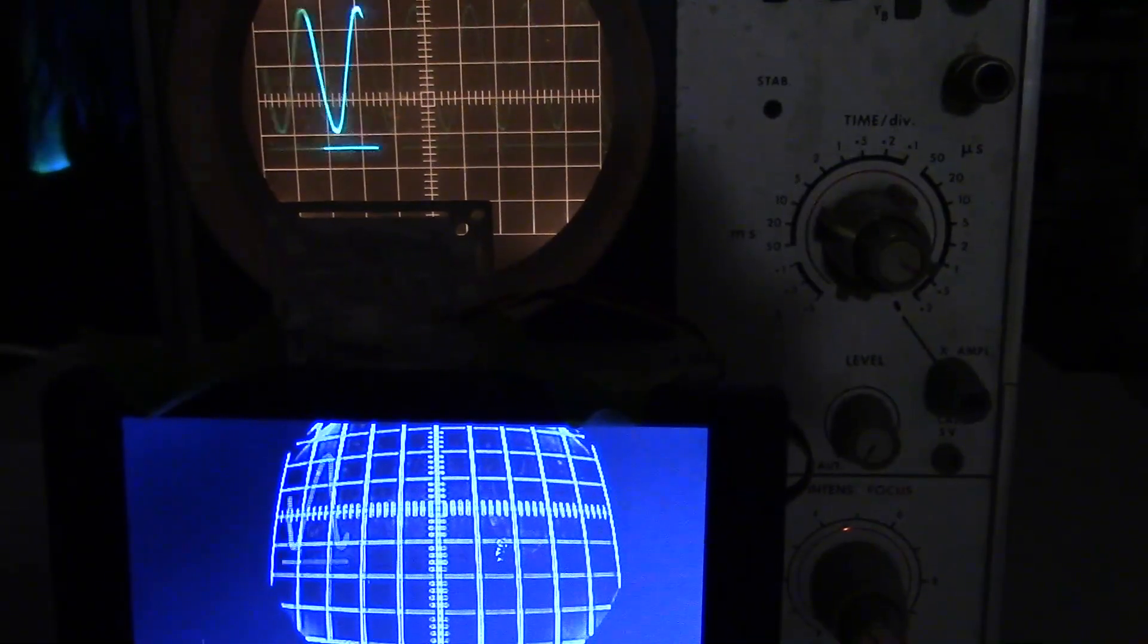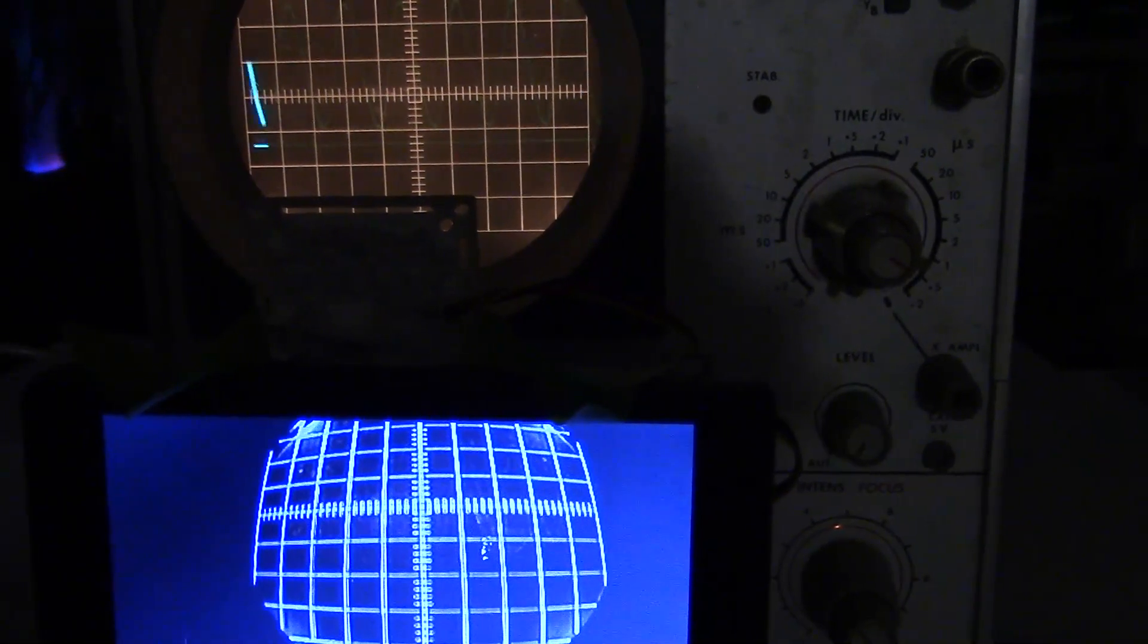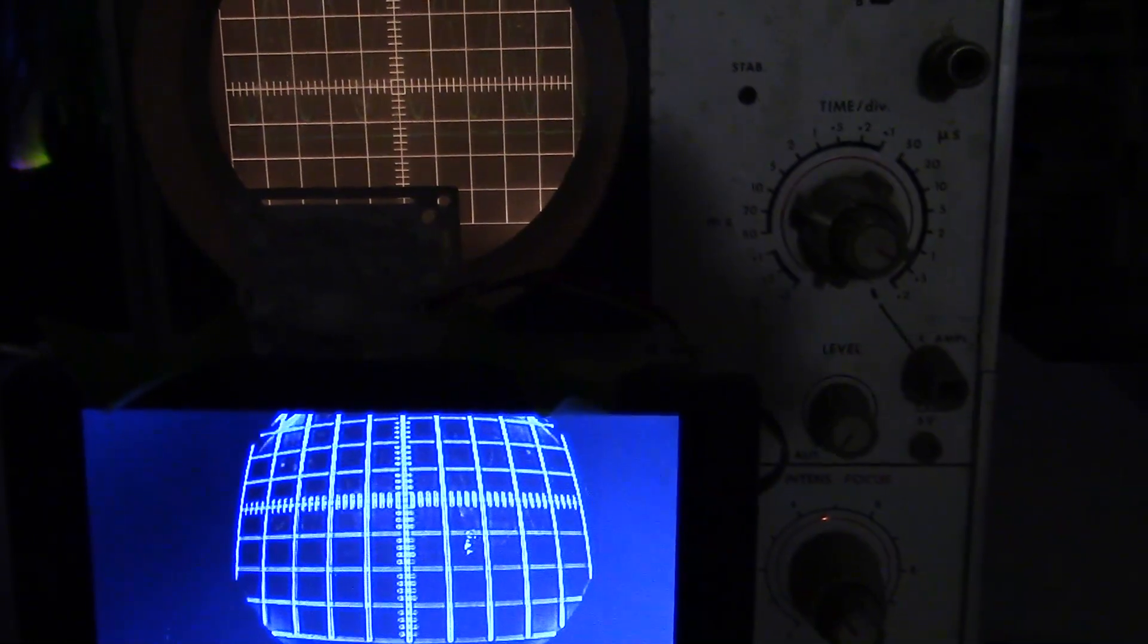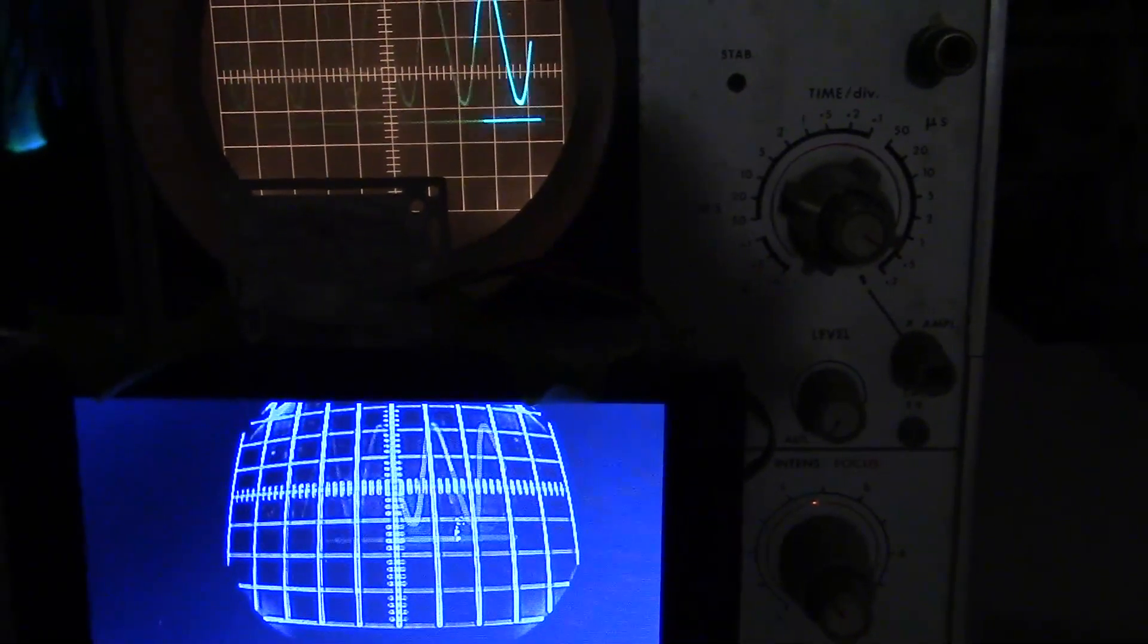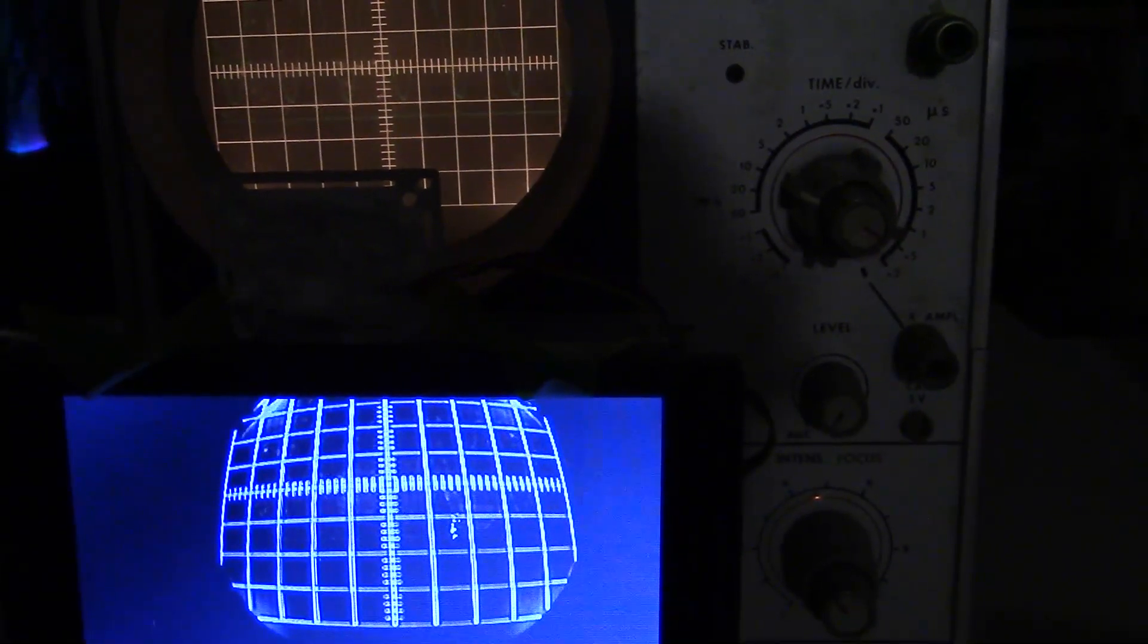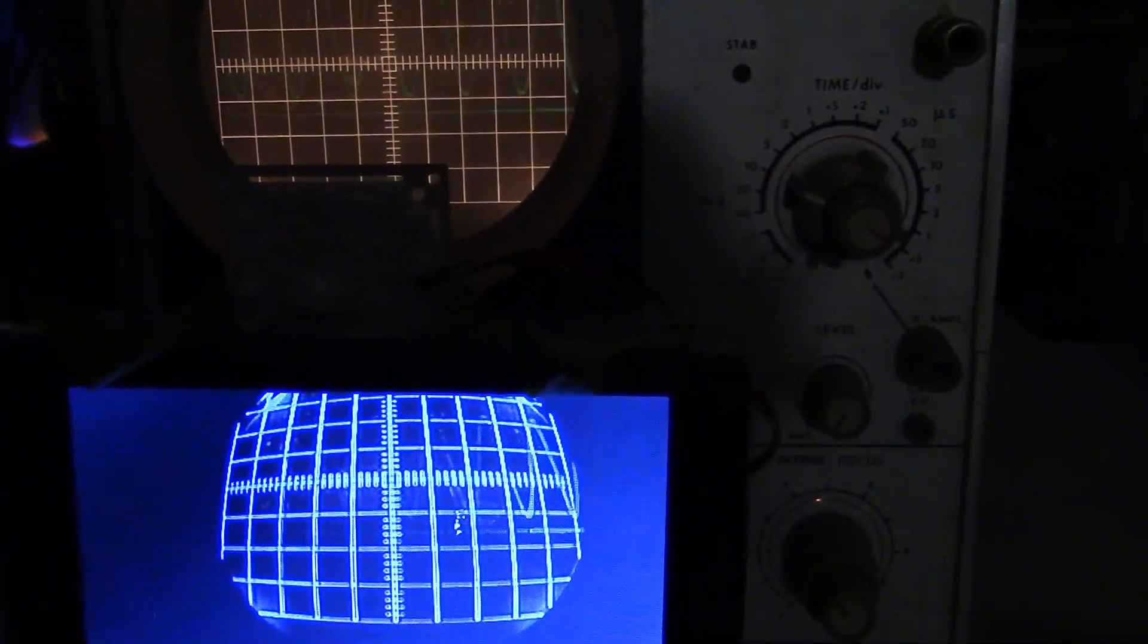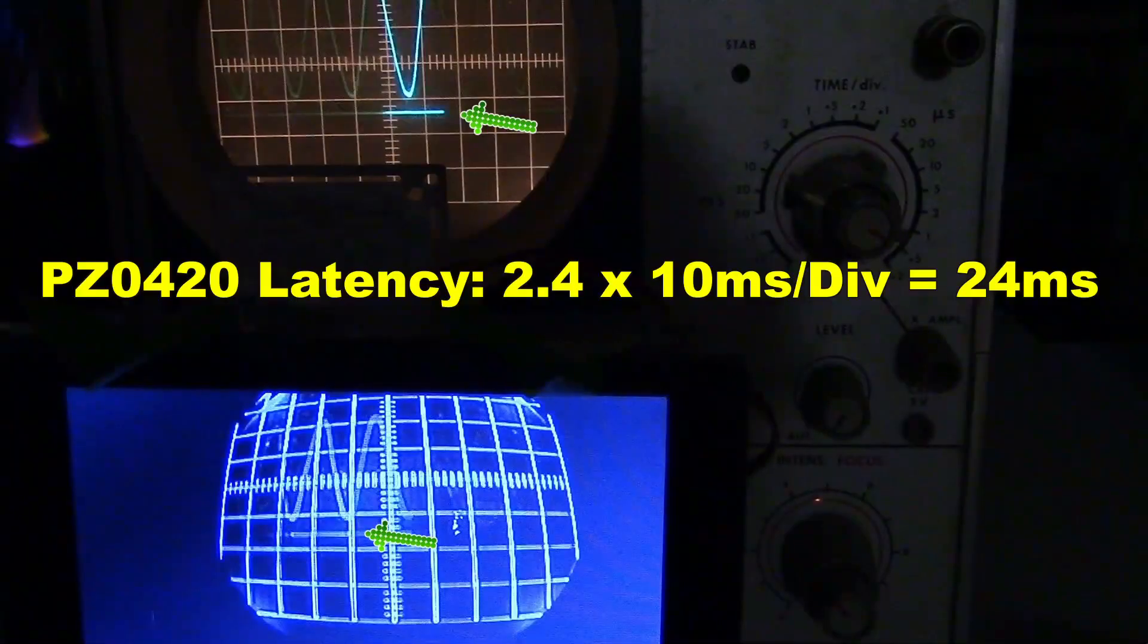Here we are with 10 milliseconds per division looking at the PZ0420 camera. That's 10 milliseconds for each of the 10 divisions on the screen. Look at the green arrows on the scope and in the monitor—you can see the head of the trace is about 2.4 grid spaces behind on the monitor. That's times 10 milliseconds per division, equals 24 milliseconds.